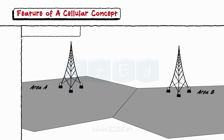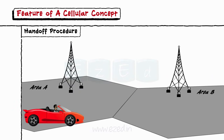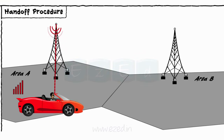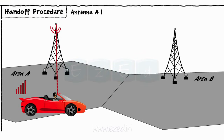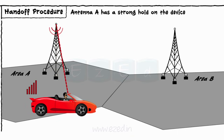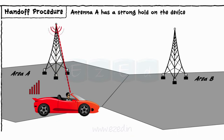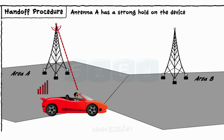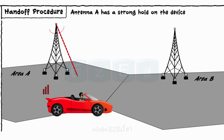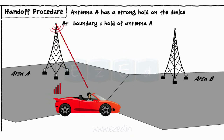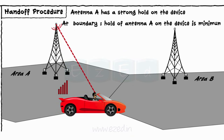When someone, user X, travels in area A, he receives the signal from base station A. That is, antenna A has a strong hold on our device's signal. But as he moves away from antenna A, the signal strength gradually decreases. At the boundary of cell A, the hold of antenna A on the device is minimum.